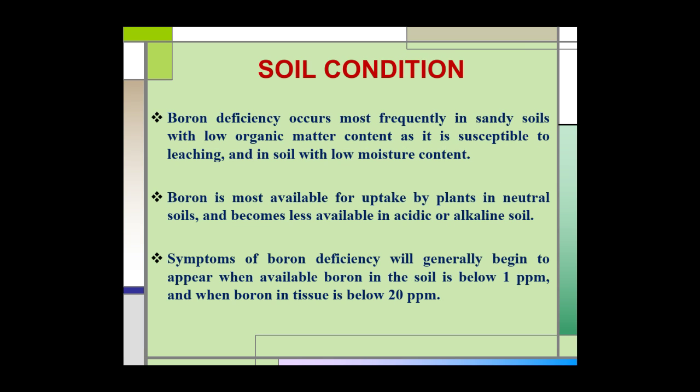Soil conditions also affect the availability of boron to plants. Boron deficiency occurs most frequently in sandy soils with low organic matter content, as it is susceptible to leaching, and in soils with low moisture content. Boron is most available for plant uptake in neutral soil and becomes less available in acidic or alkaline soil. Symptoms of boron deficiency generally begin to appear when available boron in the soil is below 1 ppm and when boron in tissues is below 20 ppm.